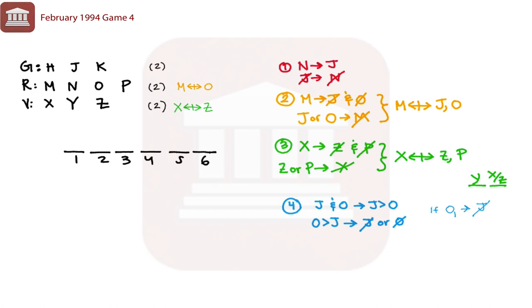Okay, so rule number five: X cannot be played on the fifth Sunday unless one of Rodrigo's concertos is played on the first Sunday. So if X is on the fifth Sunday, then R is on the first, and if R is not on the first, then X is not on the fifth.